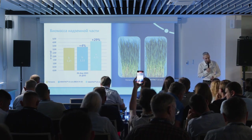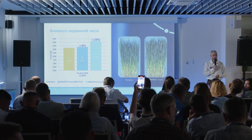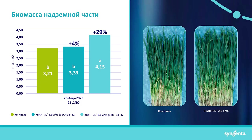This higher photosynthetic activity directly affects how the plant grows and develops — which is exactly what we need. And it was reflected in vegetative biomass accumulation: since the treatment was applied at the tillering stage, plants were collected at the stem elongation phase and weighed. The Kvantis 2-liter variant was ahead of the control by almost 30%.